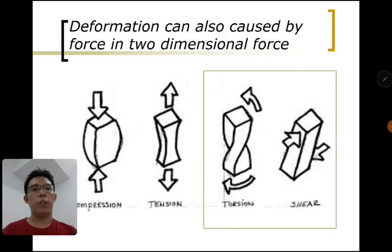There are actually two more types of deformation caused by the different dimension of force, which is called torsion and shear. But we are not going to learn about those in this topic, just to give you an impression that it's actually not just tensile and compressive.